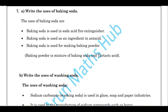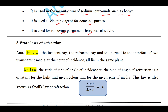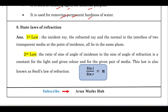The uses of baking soda: it is used in soda-acid fire extinguishers, as an ingredient in antacids, and for making baking powder — a mixture of baking soda and tartaric acid used in bakeries. Uses of washing soda: sodium carbonate is used in glass, soap, and paper industries; in the manufacture of sodium compounds such as borax; as a cleaning agent for domestic purposes; and for removing permanent hardness of water.